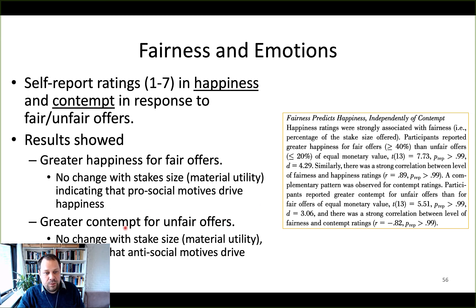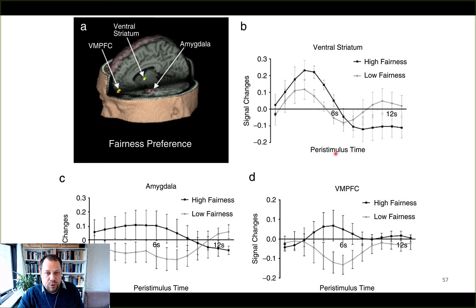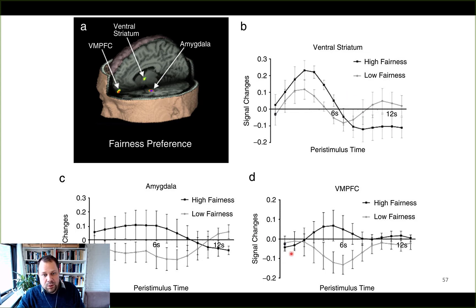There was also greater contempt for unfair offers, independent of what the authors called material utility, or the stake size. It didn't matter how much money you got — if it was an unfair offer, you felt contempt; if it was a fair offer, you were happy. These are mostly regression analyses, so they're still correlational. But even controlling for monetary stake size, what we typically see in VMPFC and ventral striatum is that activity in these regions directly tracks subjective value. And in the social domain, independent of monetary amount received, fairness seems to drive activity in the ventral striatum and also in VMPFC.